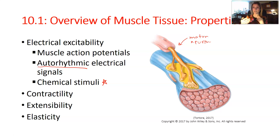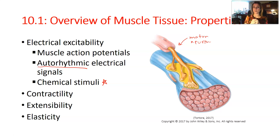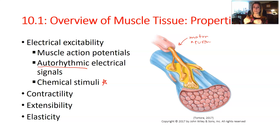That's why your heartbeat is so predictable — unless you're exercising or frightened, in which case it speeds up. That's what the auto-rhythmic electrical signal means. All muscle cells have the ability to propagate an action potential through them, and it's these action potentials that cause muscle contraction.